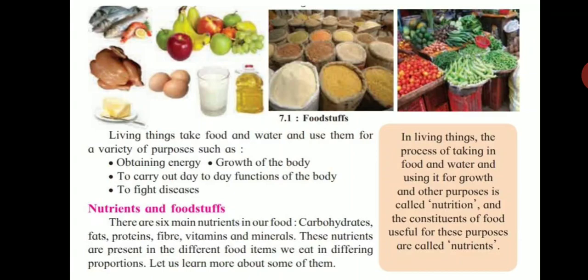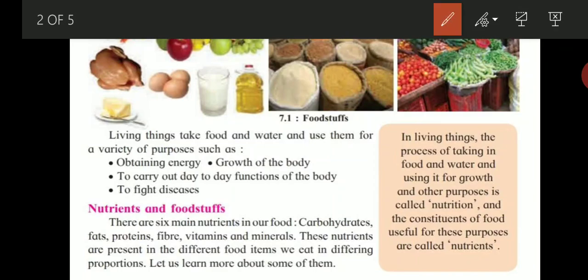These six groups of nutrients — carbohydrates, fats, proteins, fiber, vitamins, and minerals — can be divided into macronutrients and micronutrients. Macro means the nutrients required in large quantity for our body; micro means nutrients required in small quantity. Carbohydrates, fats, and proteins are the macronutrients, while fibers, minerals, and vitamins are micronutrients.